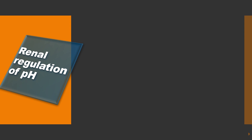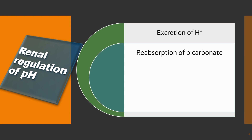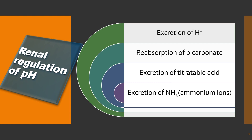There are different steps for renal regulation of pH. The first step is secretion or excretion of hydrogen ion to the tubular fluid by the tubular cell. The second step — the most important step — is reclamation or recovery or reabsorption of bicarbonate by the tubular cells from the tubular fluid and into the plasma or circulation. The third step is excretion of titratable acids, and the last step is excretion of ammonia in the form of ammonium ions. We will see these steps one by one in detail.